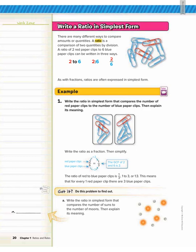So today we're going to learn about ratios. A ratio is a comparison of two quantities by division. Ratios can be written in three ways.